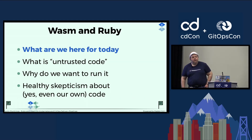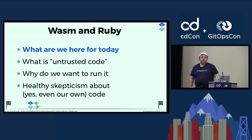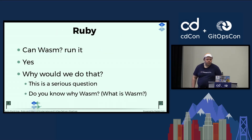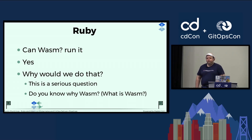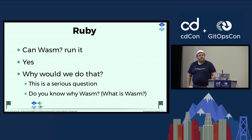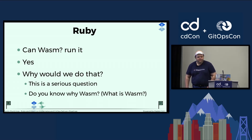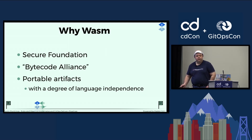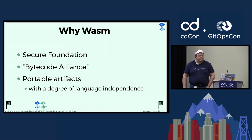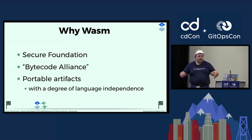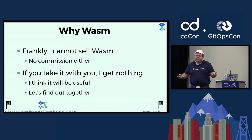So what are we here for today? What is untrusted code, and why do we want to run it? I do not trust my own code — so that is part of the answer. Can Wasm run Ruby? That's the first question. Yes, it can. But after exploring the topic pretty thoroughly, I came to the conclusion that I'm not sure there's a good reason to do that, at least for the purposes I intended. So do you know why you want Wasm? Do you know why you want to run Ruby in Wasm, if that's what you want at all?